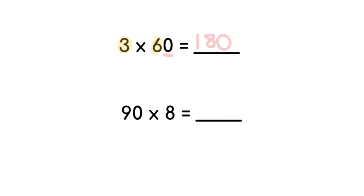Let's do the next one: 90 times 8. We'll look for that basic fact. 9 times 8 without the zeros gives us 72. And then we'll go ahead and add the zero to make it 720. 90 times 8 equals 720.